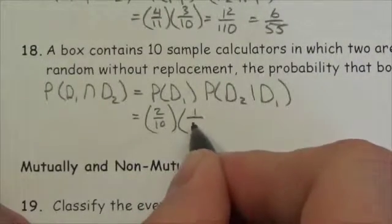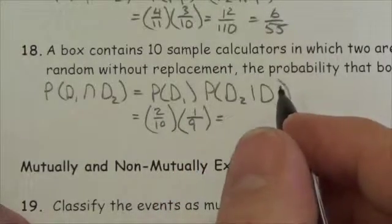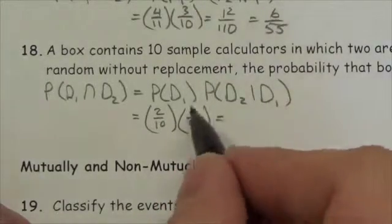Once that's done, there's only one defective one left over out of 9, so 1 over 9.